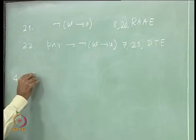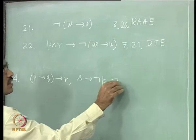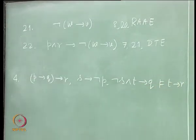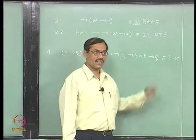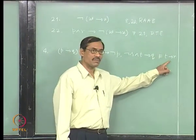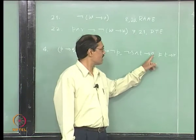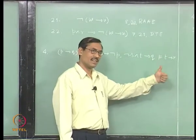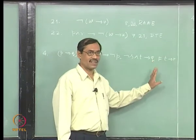That problem says we go for P implies Q implies R, S implies not P, not S and T implies Q — that should give us T implies R. So your strategy says: if you use the deduction theorem, assume T to get R. If you want to use reductio ad absurdum, you start with not of T implies R, that will give you T and that will also give you not R. That is the same as taking T as an extra premise, concluding R, and after that using reductio ad absurdum. But here, it may be possible to get R directly without going to RA.